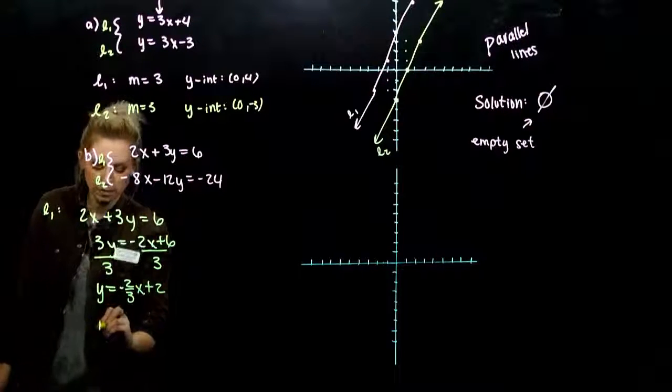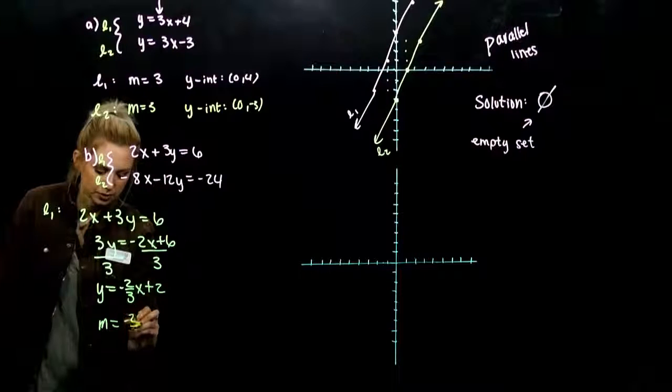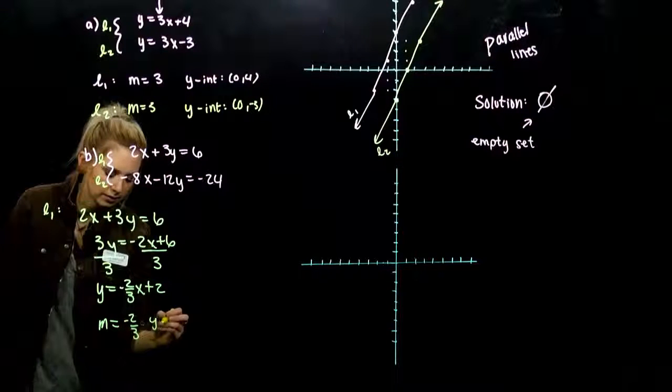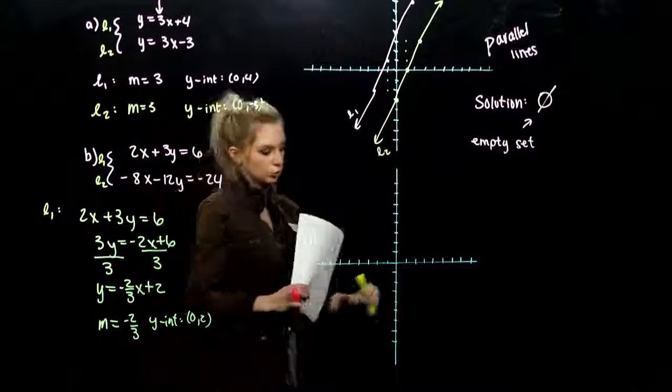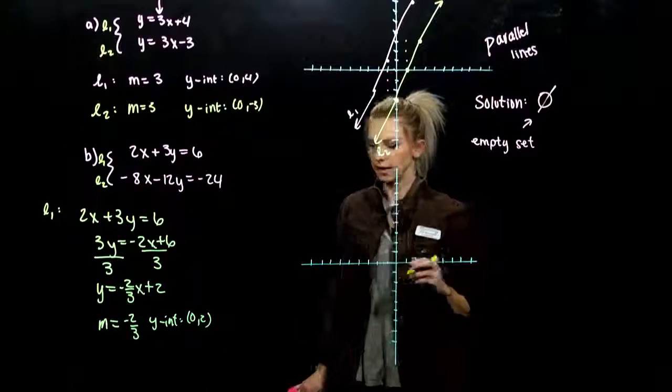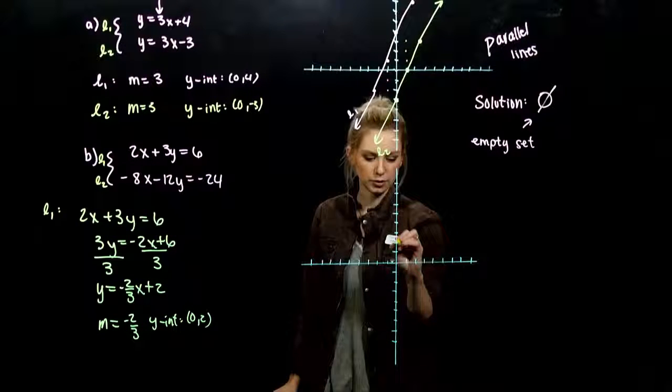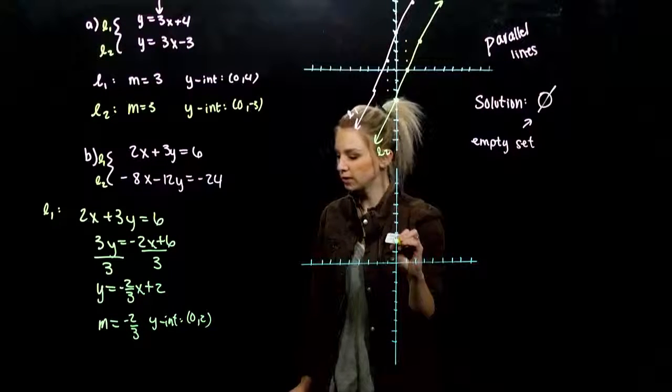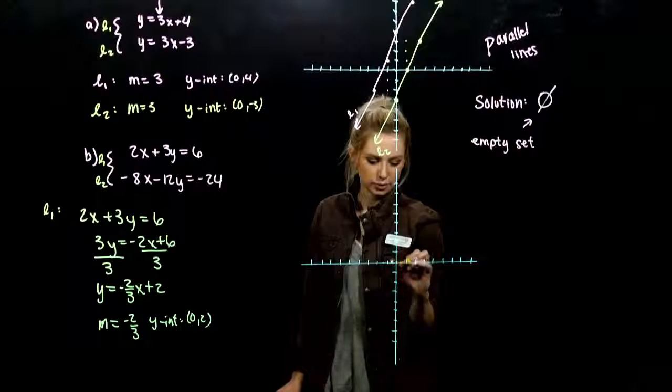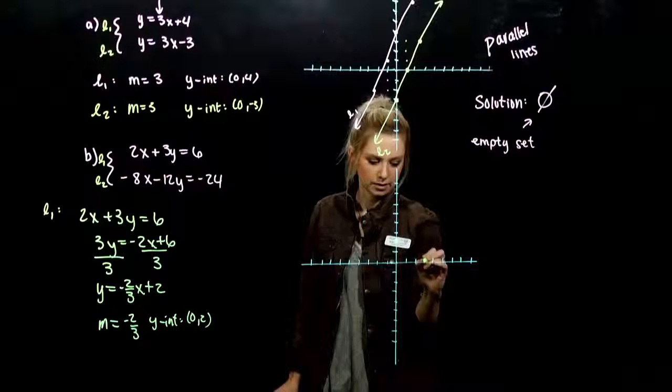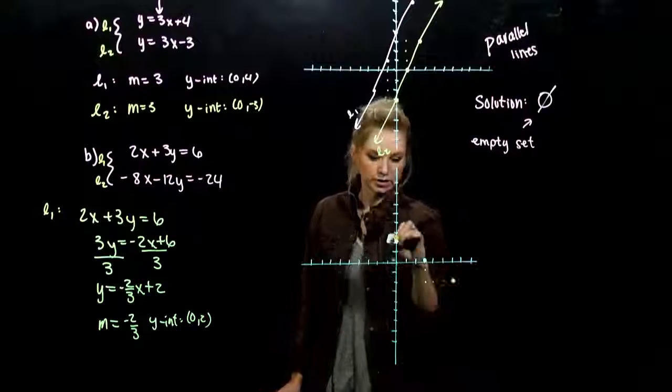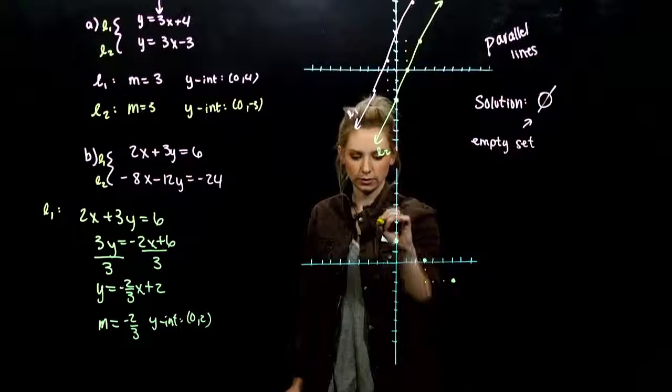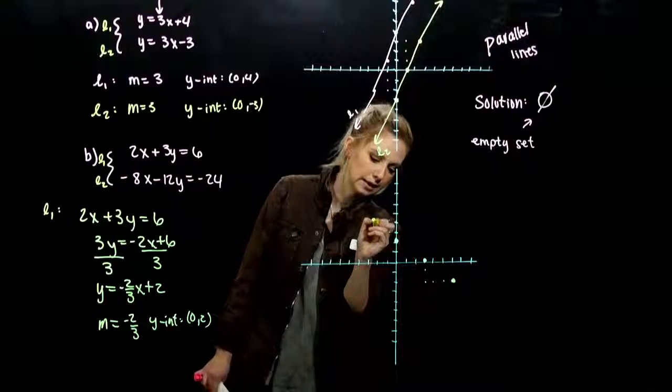So our slope is minus 2 thirds. Y-intercept goes through 0, 2. So we can go ahead and graph that first line. So going through the point 0, 2. From there, I move according to my slope down 2 over 1, 2, 3. Down 2 over 1, 2, 3. Or what else could we have done? Up 2, back 1, 2, 3. That will also fall on that line.